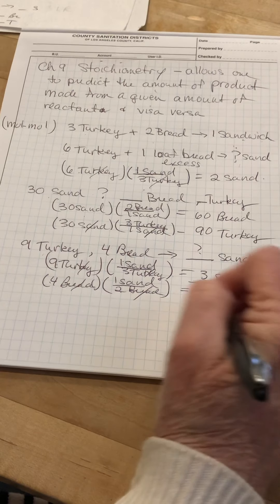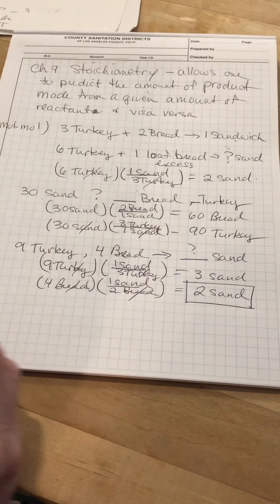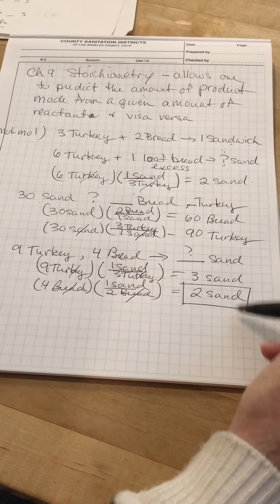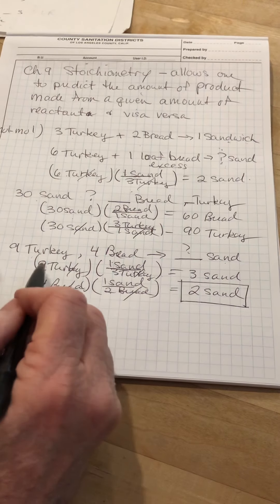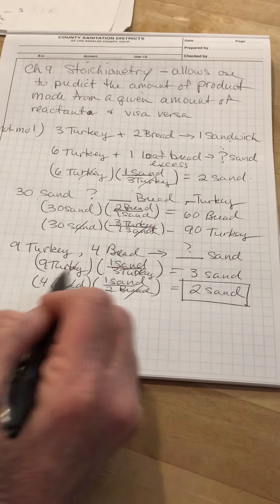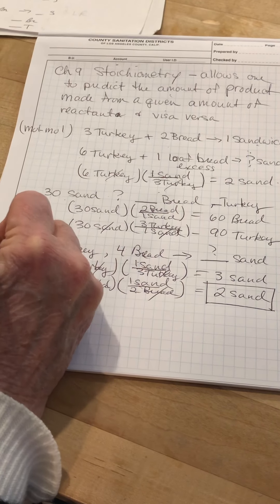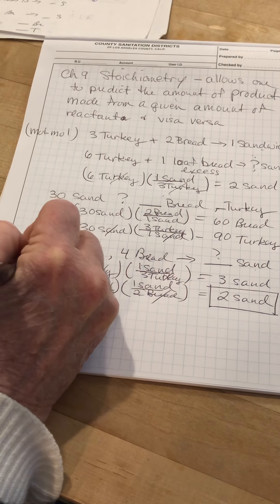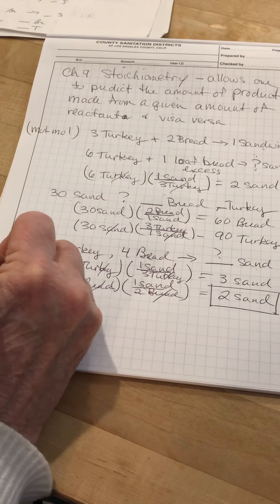And the lower number in this calculation is always the amount you can form. You would never add these up. You would never say, oh, I'm going to use all this turkey, and I'm going to stuff it in between two slices of bread. You know, you're just going to use the bread and make two sandwiches. That's what your book calls a limiting reactant calculation.